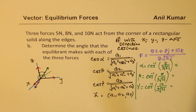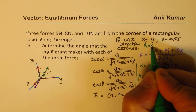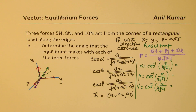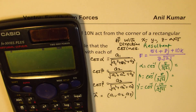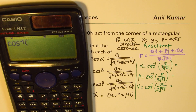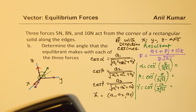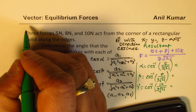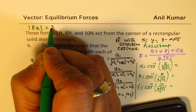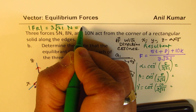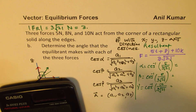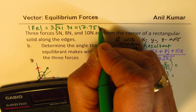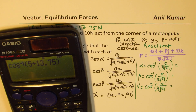At times you may need to find the angle the resultant makes, and other times the equilibrant. We use the calculator: cos⁻¹(5/13.75) ≈ 68.67°, rounding to 68.7°. Then changing 5 to 8 gives approximately 54.4°, and changing to 10 gives approximately 43.3°. These are the angles the resultant makes with each axis.